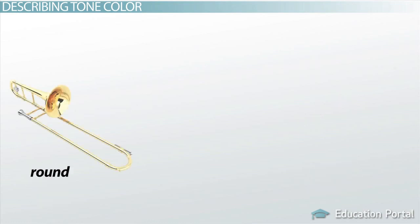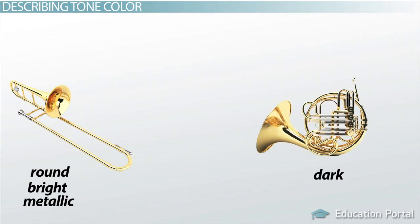A trombone might sound round, bright, and metallic, while the French horn sounds dark, thick, and warm.